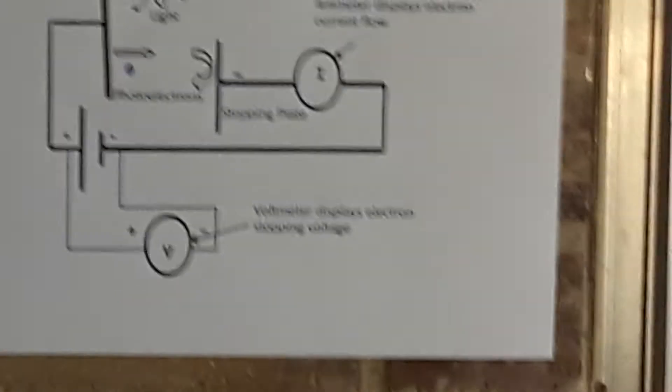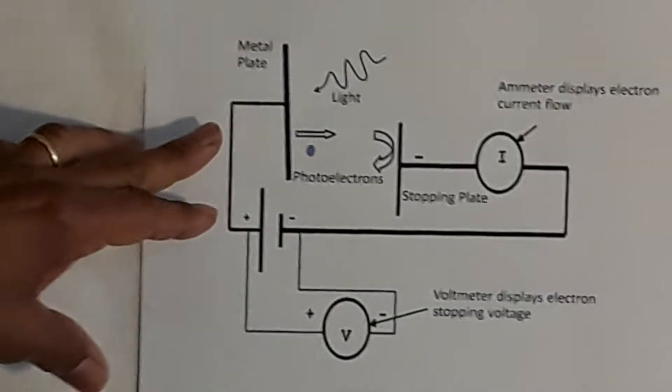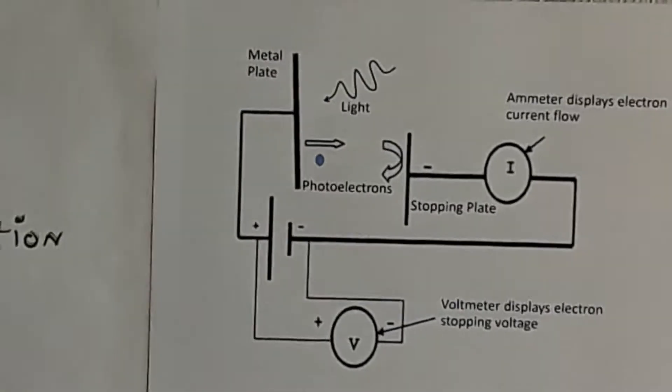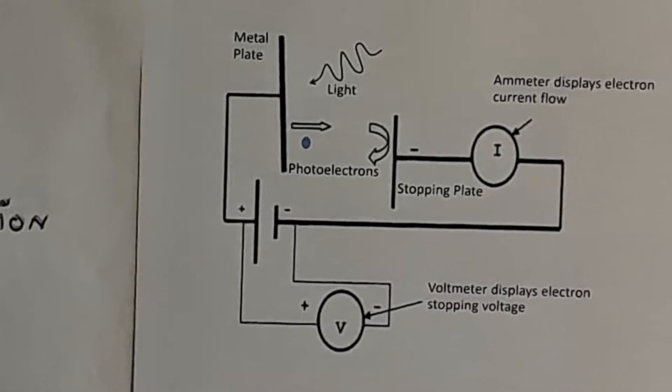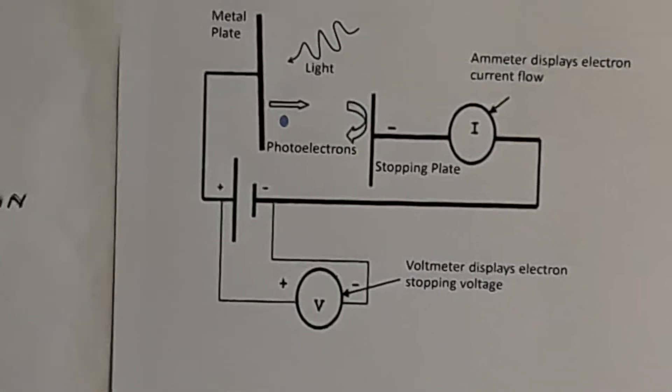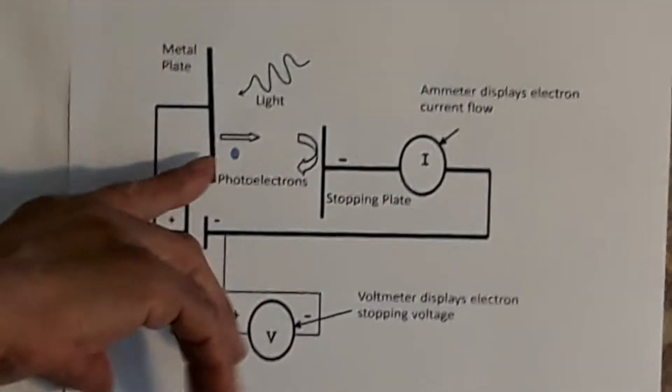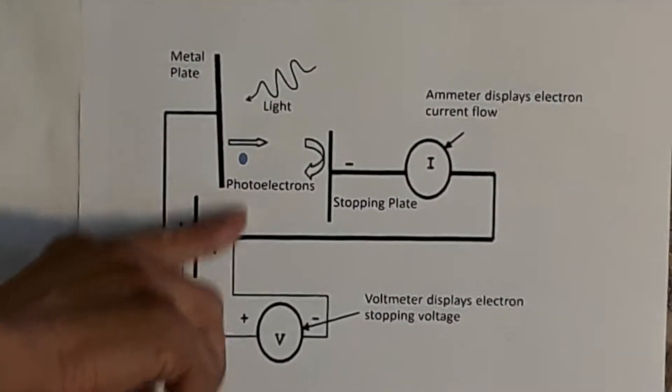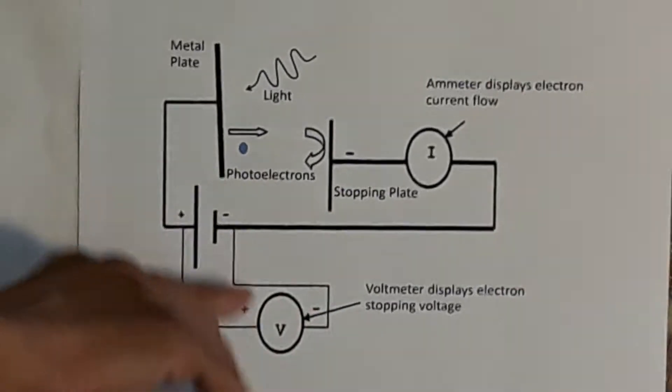So we have a light source that's going to be shining on this metal plate here. Now by the photoelectric effect, we know that with one photon we interact with one electron. That electron will gain the energy provided by the one photon and it will go off. It's called a photoelectron.